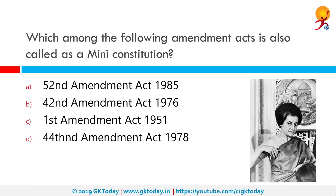Which among the following amendment acts is also called a mini constitution? The correct answer is the 42nd Amendment Act of 1976. It is the most comprehensive amendment to the Constitution and carried out major changes, which is why it is known as the mini constitution.